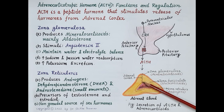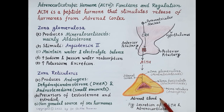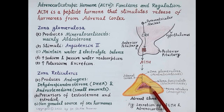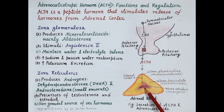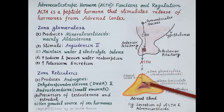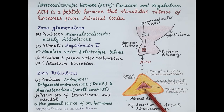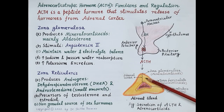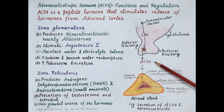CRH stimulates anterior pituitary to secrete ACTH, which further stimulates the adrenal cortex to release mineralocorticoids, glucocorticoids, and androgens. Now this is the adrenal gland — it consists of an inner medulla, shown here in red, and an outer adrenal cortex. The medulla is composed of around 20% of the total adrenal tissue, while the rest 80% is the adrenal cortex. The adrenal medulla is made up of neuroendocrine tissue and produces neurotransmitters — adrenaline and noradrenaline.